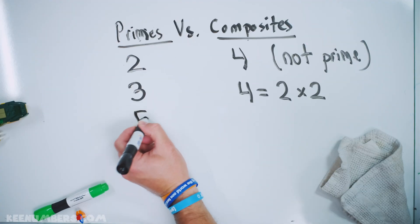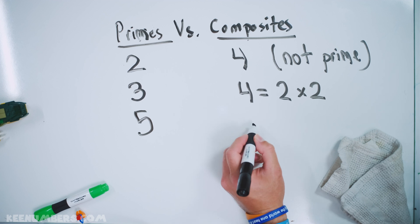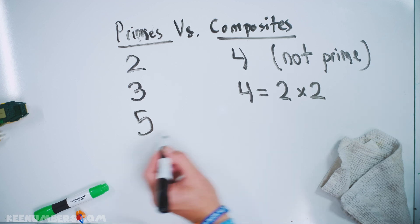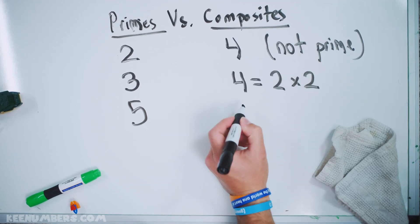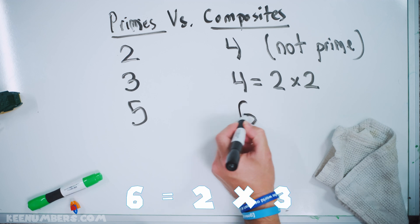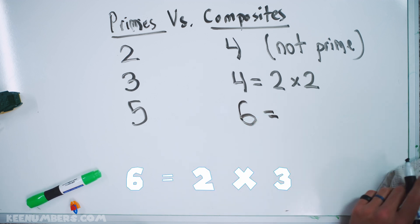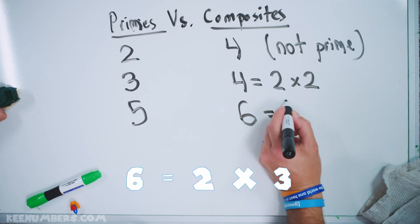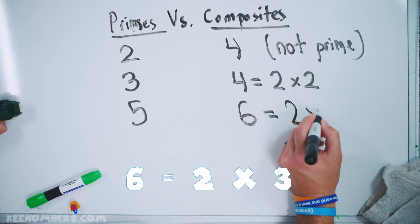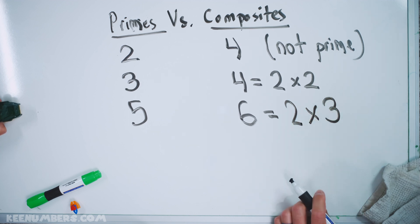Five is a prime number — you can't break it up anymore. What about six? Is six a prime number or a composite number? Composite! That's right. Because six is equal to two by three.